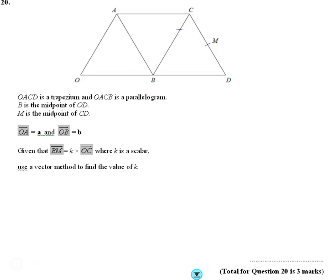Right, nice vector question. Here we go. So we've got OACB. So OACB is a parallelogram. The first one is a trapezium and the second one is a parallelogram.